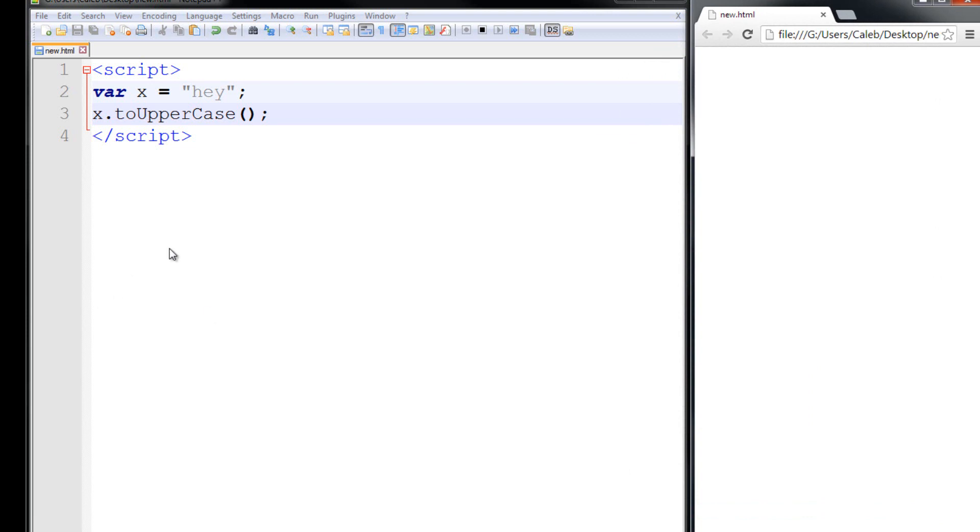A value is returned, but we never displayed it to the screen. So we could try alert x. And then when we save it and update our page, a JavaScript alert is going to come up that says "hey". And toUpperCase is not going to affect the original variable. But we could do something like toUpperCase here. So now we're alerting the uppercased version of x. So when we refresh the page now, it's "HEY" in all capital letters.